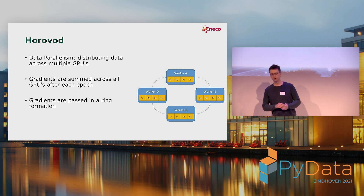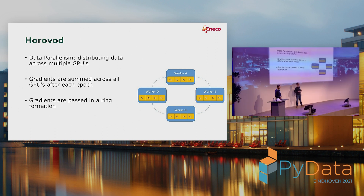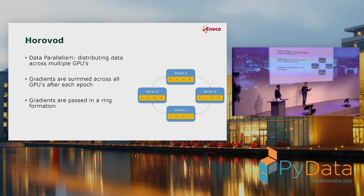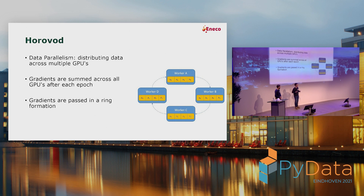A key characteristic of Horovod is its ring formation. The classic solution would be a central parameter server to store all gradients and share them around, but that adds a lot of overhead. Horovod uses a ring formation where every node only needs to communicate with one other node. This makes epochs take almost exactly the same time as before, except you now process double the batch size, or quadruple or octuple depending on how many GPUs you use.